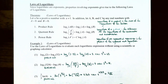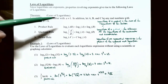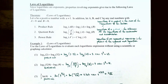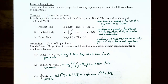Since logarithms are just exponents, there are properties involving exponents that give rise to what's called the laws of logarithms. The theorem states: let a be a positive number where a is not equal to one — that's the base of the logarithmic function. In addition, let capital A, capital B, and capital C be any real numbers where capital A and capital B must be positive numbers.